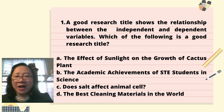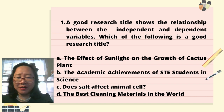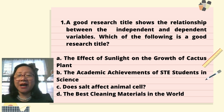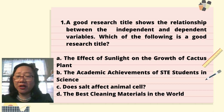Question 1: A good research title shows the relationship between the independent and dependent variables. Which of the following is a good research title? A. The effect of sunlight on the growth of cactus plants. B. The academic achievements of ST students in science. C. The salt effect animal cell. D. The best cleaning materials in the world.